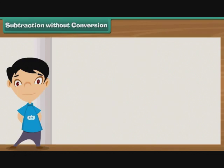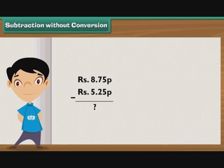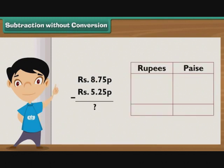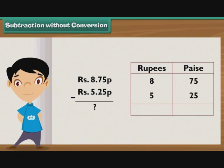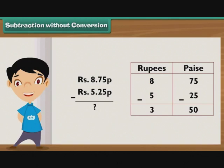Subtraction without conversion. Let's learn how to subtract 5 rupees 25 paise from 8 rupees 75 paise. Write 8 rupees 75 paise as ₹8.75P, then write 5 rupees 25 paise as ₹5.25P under it, so that the rupee part falls in the rupee column and paise part falls in the paise column. Subtract 25 from 75 to get 50; write 50 in the paise column. Subtract 5 from 8 to get 3; write 3 in the rupee column. So the answer is 3 rupees 50 paise.